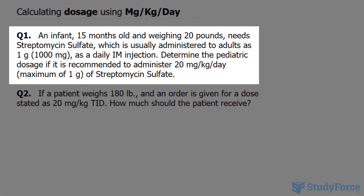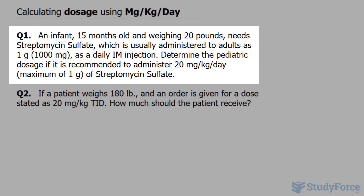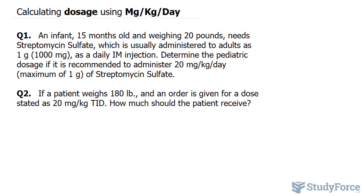Let's read the question. An infant 15 months old and weighing 20 pounds needs streptomycin sulfate, which is usually administered to adults as one gram or 1,000 milligrams as a daily intramuscular injection. Determine the pediatric dosage if it is recommended to administer 20 milligrams per kilograms per day for a maximum of one gram of streptomycin sulfate. Notice the mismatch: the information provided by the box is in kilograms, whereas this infant's weight is in pounds.